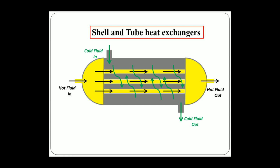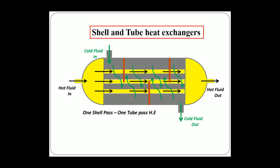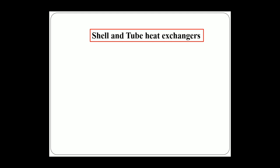Shell and tube heat exchangers are named based on the term 'pass.' A pass refers to how many times the fluid moves from one side to the other — left to right or right to left. Here, the hot tube fluid moves from left to right in a single pass, and the shell fluid also moves in a single pass. Baffles are also present to create turbulence within the shell fluid, increasing heat transfer. This configuration is known as one shell pass, one tube pass.